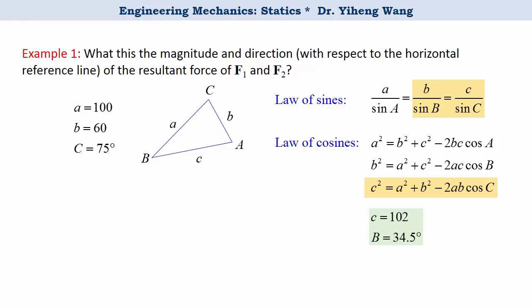And from here we can also calculate this angle right here, theta equals to 45 degree, minus the angle b, 34.5 degree, to be 10.5 degree. So we not only have determined the magnitude of the resultant force to be 102 newton, but we also determined the angle made by the force with the horizontal line to be 10.5 degree. And this answers the question.